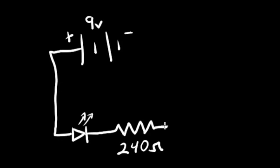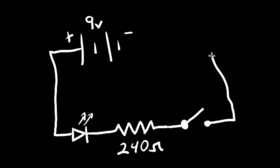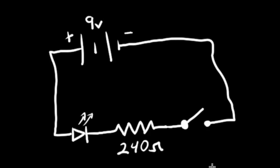Next, to make this LED turn on and off based on a switch, we need a single pole, single throw switch right here. So I'm going to draw that and then finally connect all this back up to the negative terminal of the battery. This is our completed schematic for the circuit we are going to be building. We have our LED, our resistor with a proper value, along with a switch.